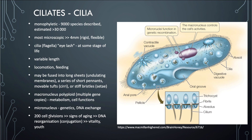Ciliates divide by binary fission — they can just make a replica of themselves. At around 200 cell divisions, signs of aging appear and the cell starts to malfunction. What ciliates can do is reorganize their DNA via conjugation: they partner up with another ciliate, exchange and reorganize their genes, which provides vitality and youth and probably extends their lifespan.